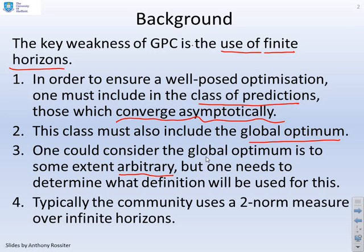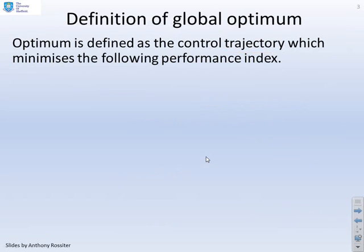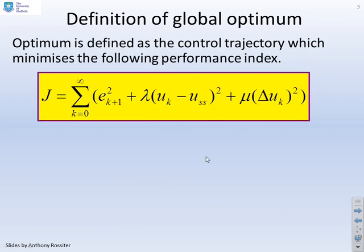Typically the community uses a two-norm measure in order to define optimum, and that two-norm measure is taken over infinite horizons. The optimum is defined as the control trajectory which minimizes the following performance index. In general, you may not use both of these input terms, but that's not a central issue.